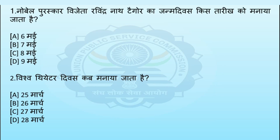पहला प्रश्न: नोबेल पुरस्कार विजेता रवींद्रनाथ टैगोर का जन्म दिवस किस तारीख को मनाया जाता है? Option A: 6 मई, Option B: 7 मई, Option C: 8 मई, Option D: 9 मई। इस प्रश्न का सही उत्तर Option D – 9 मई है।